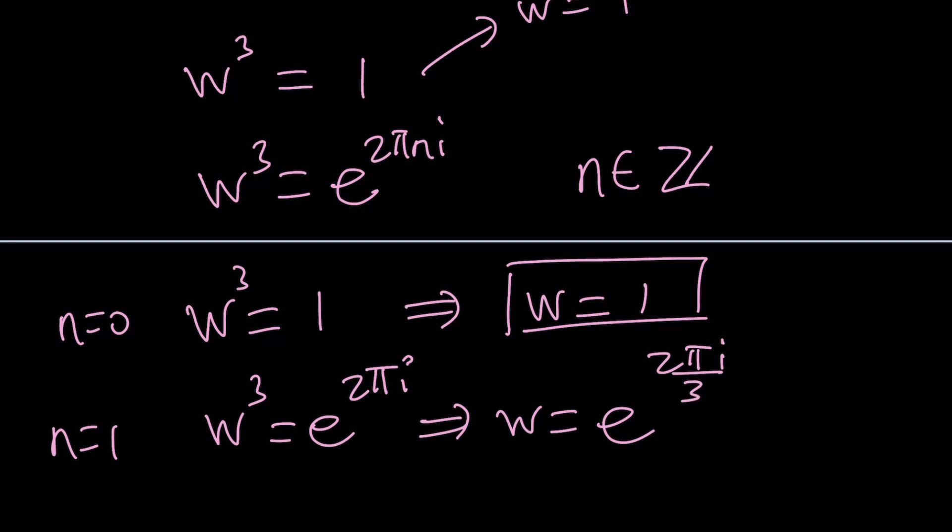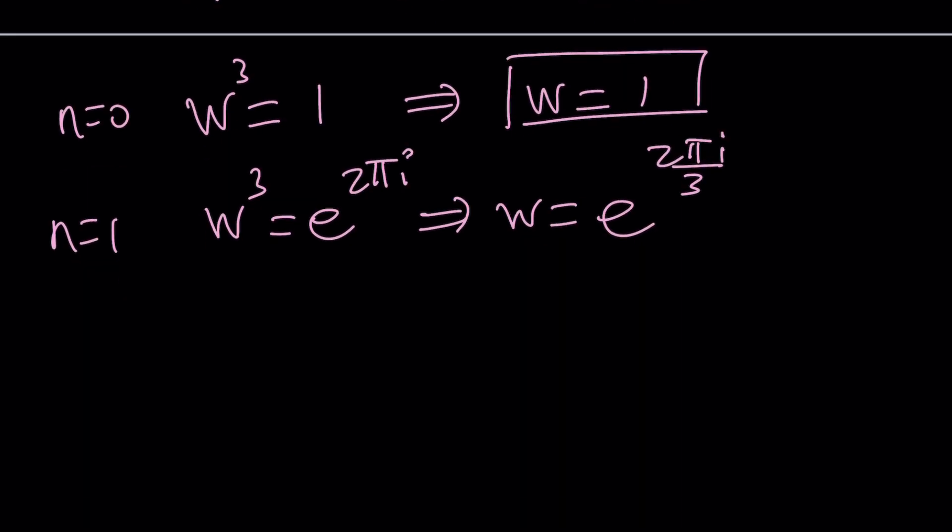So we need to focus on 2 pi over 3. In a little bit, we'll do that. And then with n equals 2, you're going to get W cubed equals e to the power 4 pi i, upon division by 3, you're going to get 4 pi i over 3. So here's what we need to think about.